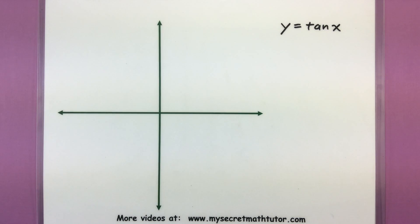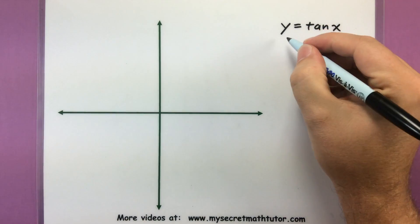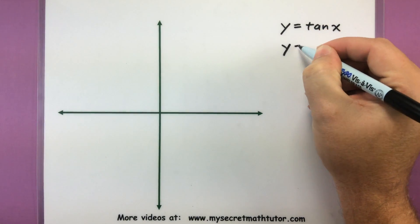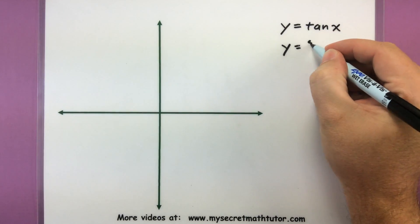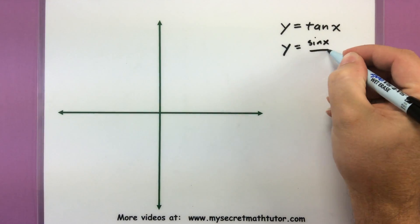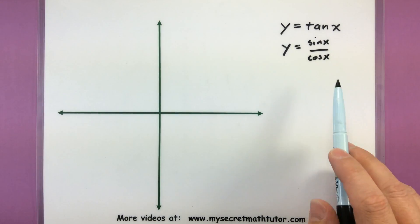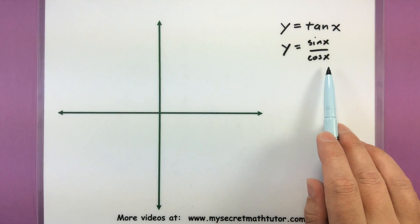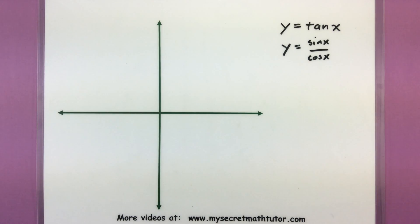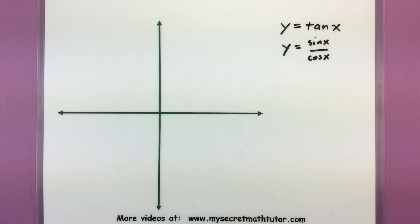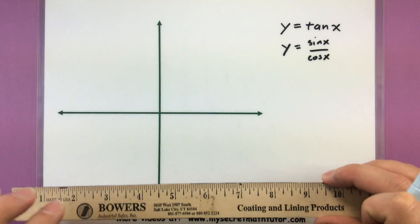The first one we want to graph is tangent. The key is really recognizing that tangent is sine over cosine. That's important to recognize because it gives you a clue on where to put the asymptotes. The asymptotes will happen wherever the bottom is equal to zero, so you want to think back to what the graph of cosine looks like and put an asymptote everywhere cosine would equal zero.